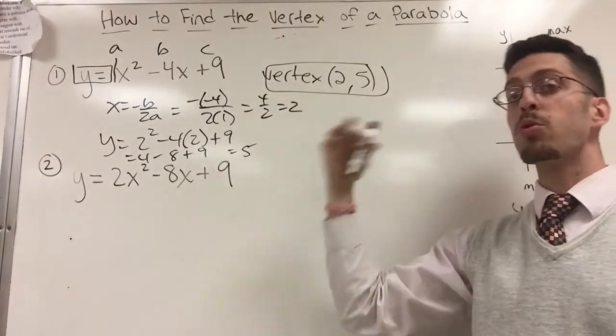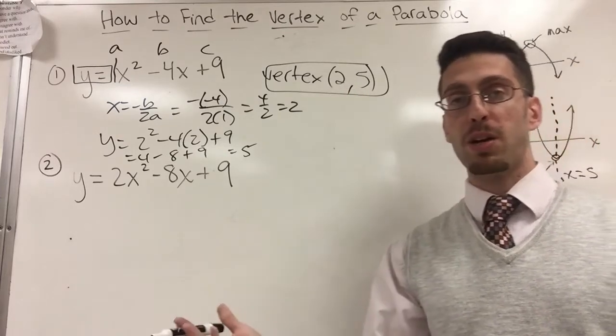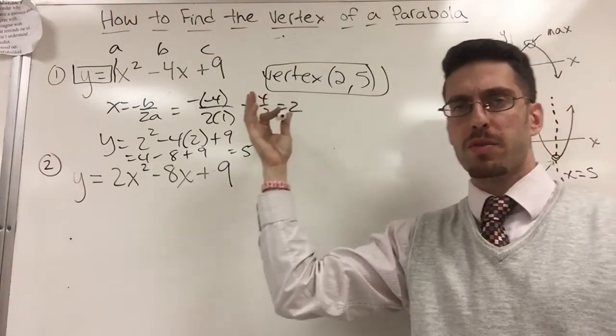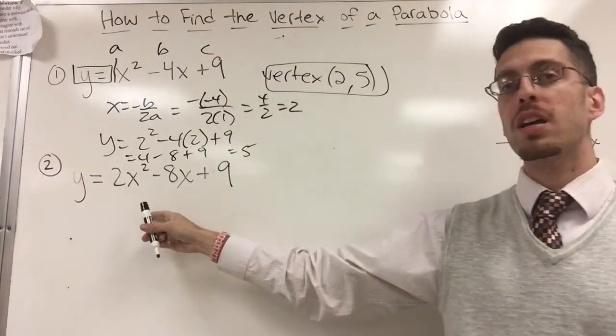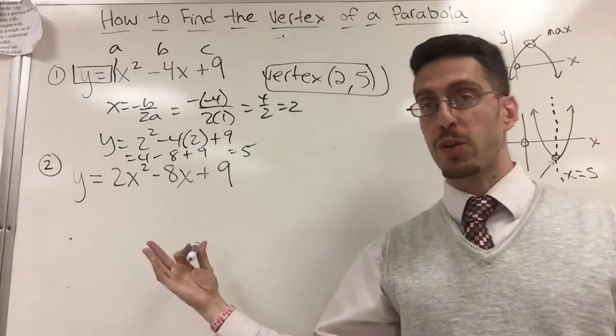2 comma 5 is your turning point. It's almost like saying the most you could do, sell 2 sneakers, make $5. Or I don't know, sell 2 million sneakers, make $5 million. It could be in terms of millions. Alright, try it again. So pause the video, do it on your own and then check your answer with me.